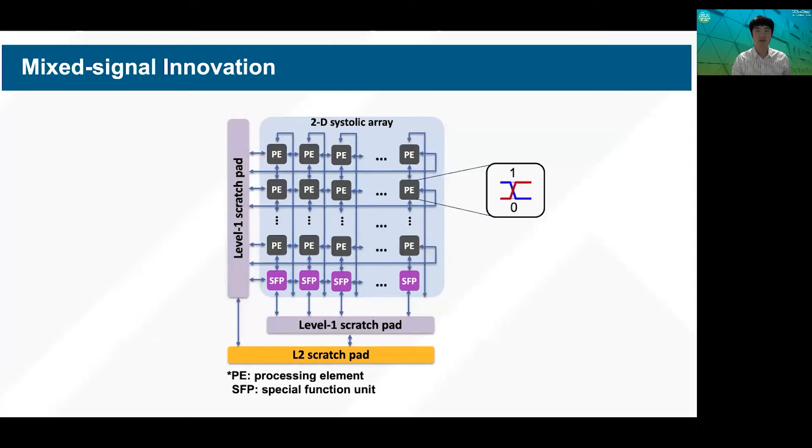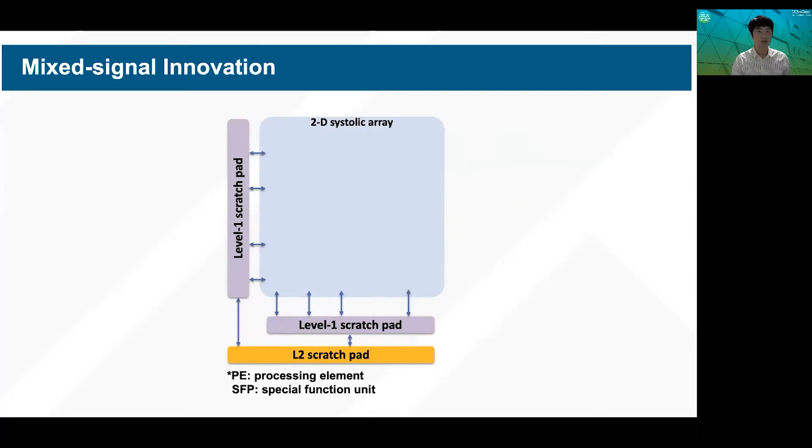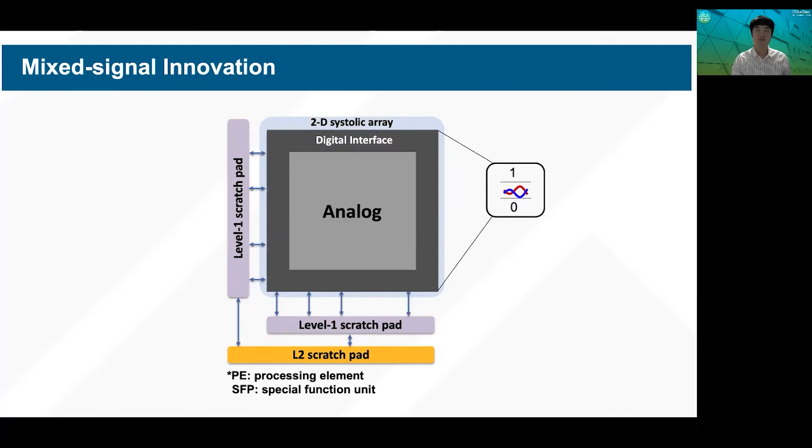In the mixed signal innovation theme, we are trying to carve out the digital core and replace it with analog core, which uses small voltage swing for significant energy efficiency. But all the interface will be maintained to be the same as digital without affecting external infrastructure such as program, instruction set, or compilers. So-called invisible analog core.